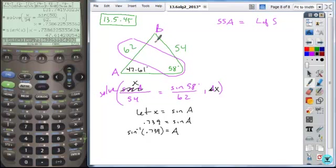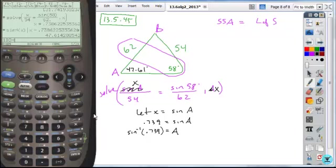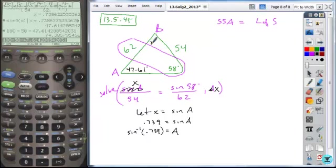And so here's my angle. The next thing is to find my remaining angle. So the remaining angle here can be found by taking the sum of the angles, 180, subtracting 58 from that and then this angle that we just found, the 47.6. And we're able to identify what the missing angle B would equal, 74.39 approximately.